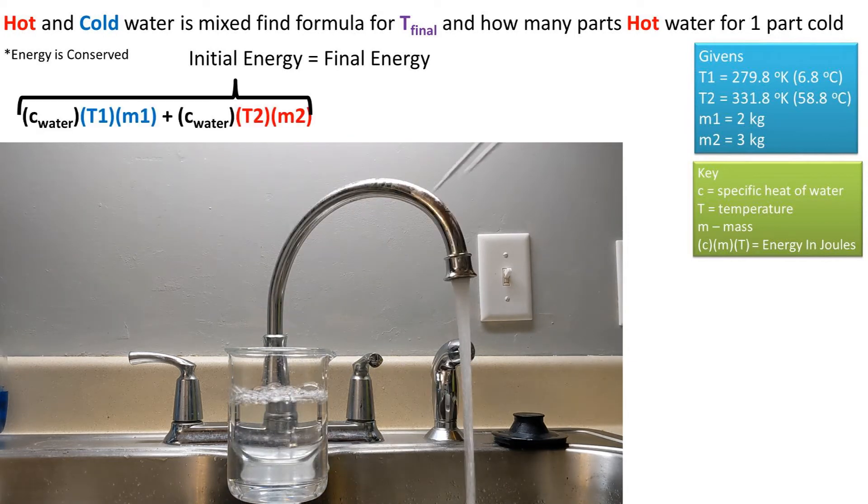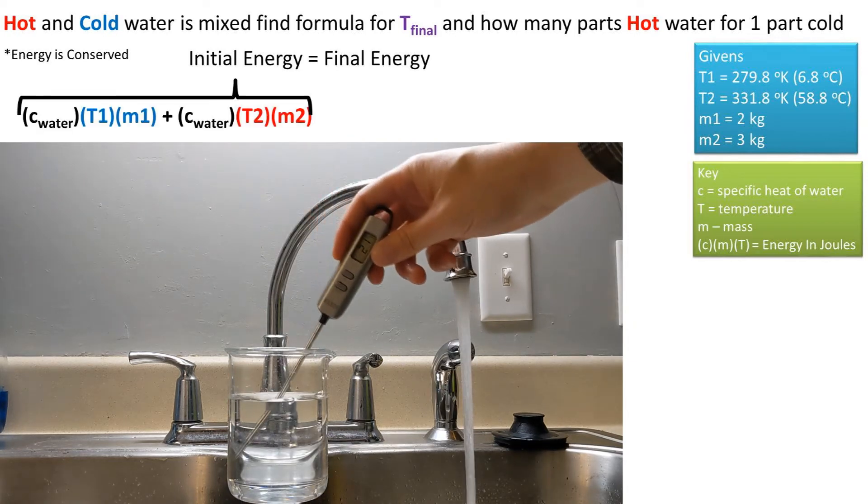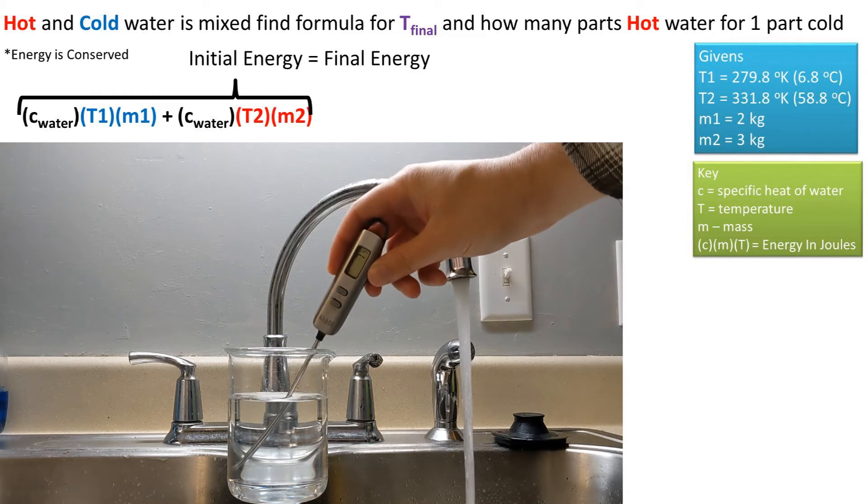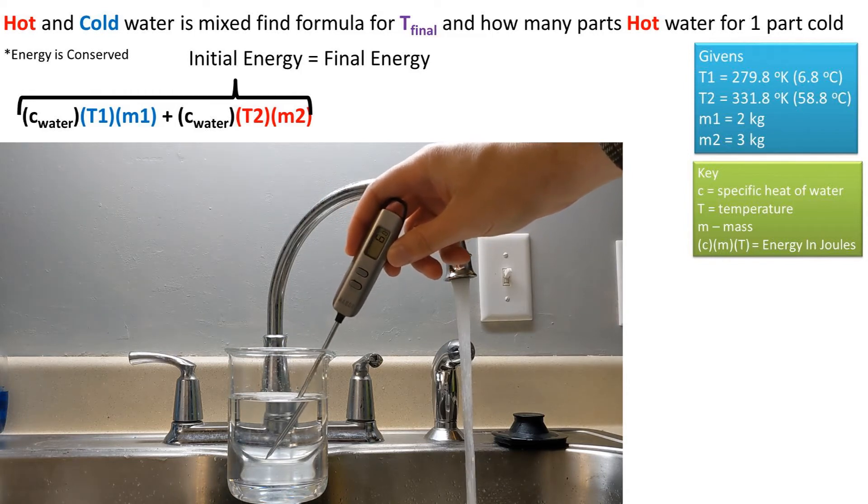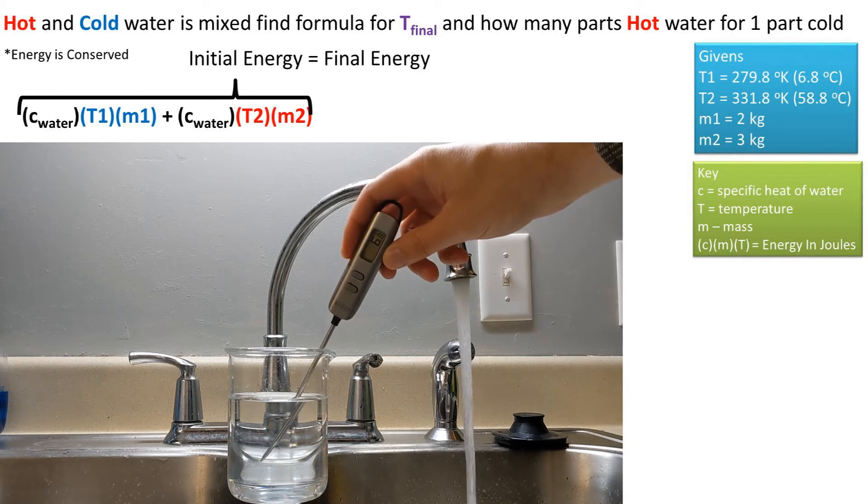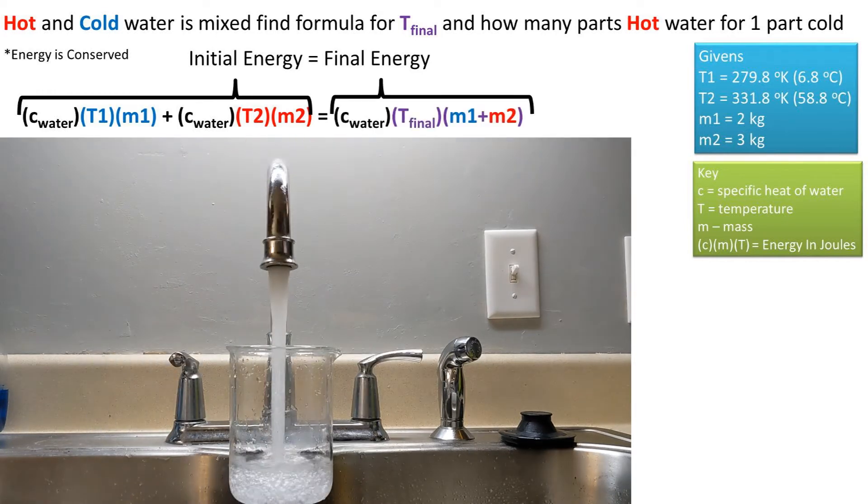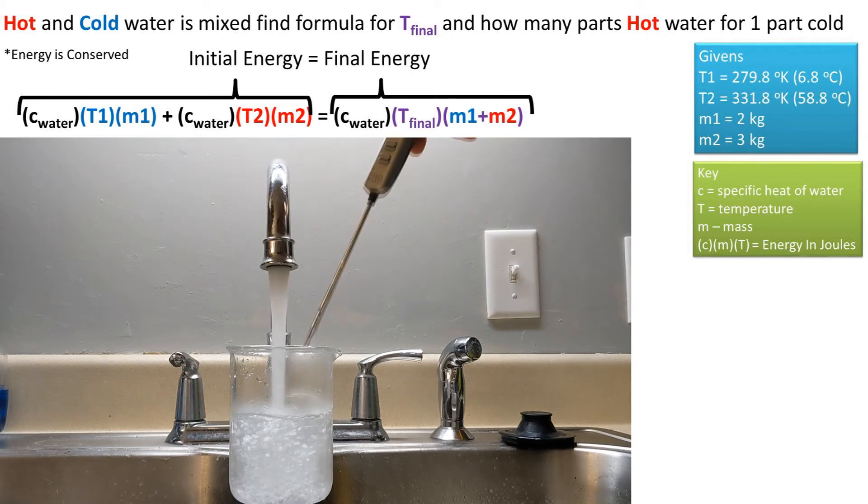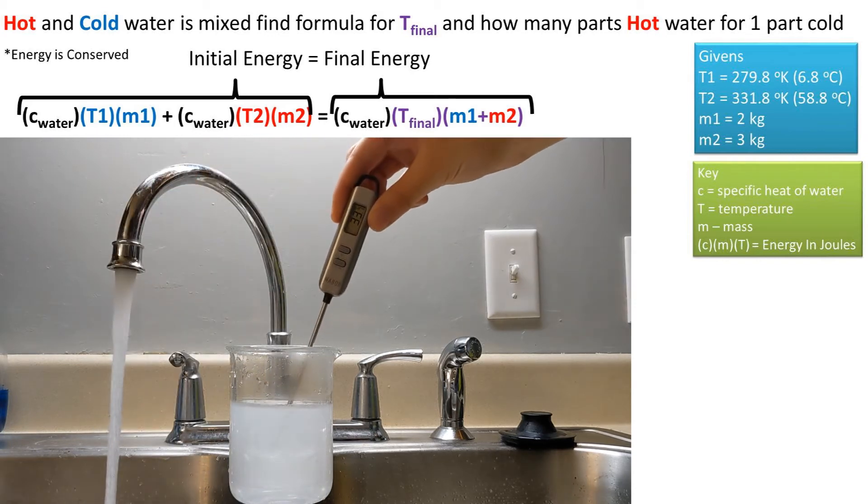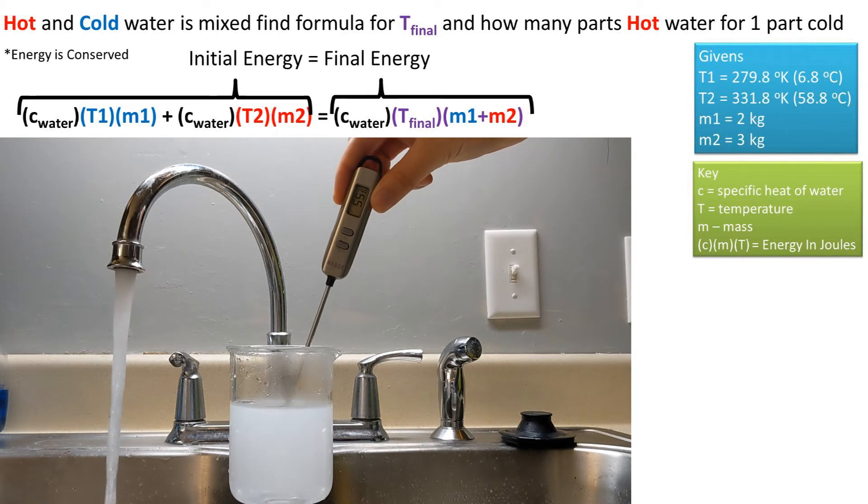So the specific heat of water times T1 times m1, plus the specific heat of water times T2 times m2, is the energy in the initial state. This can be set equal to the final energy state, which is the specific heat of water times Tfinal times the sum of m1 and m2.